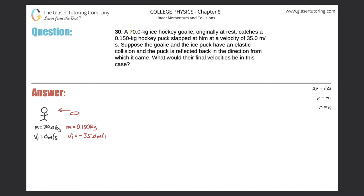Number 30. A 70-kilogram ice hockey goalie originally at rest catches a 0.15-kilogram hockey puck slapped at him at a velocity of 35 meters per second. Suppose the goalie and the ice puck have an elastic collision and the puck is reflected back in the direction from which it came. What would their final velocities be in this case?